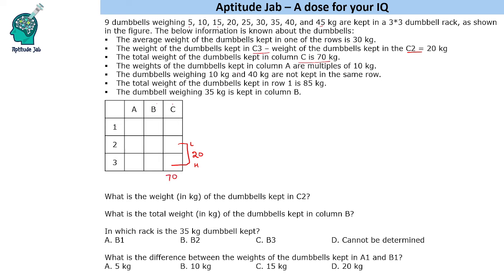The weights of the dumbbells kept in column A are multiples of 10 kg. The dumbbells weighing 10 kg and 40 kg are not kept in the same row. The total weight of the dumbbells kept in row 1 is 85 kg. The dumbbell weighing 35 kg is kept in column B. So this is the information that is given to us.